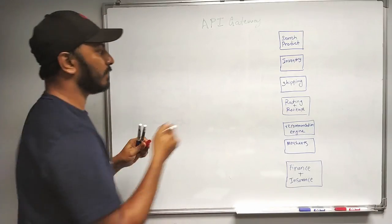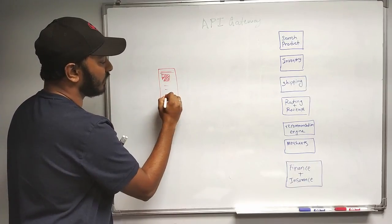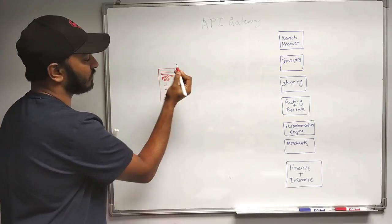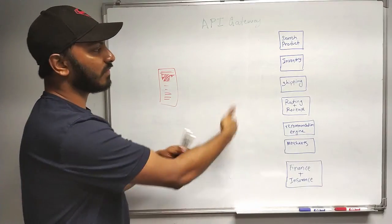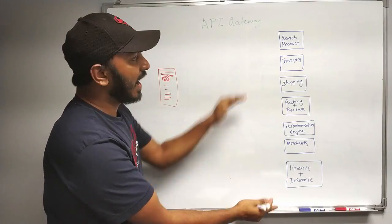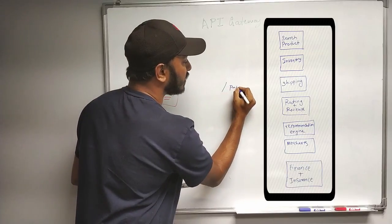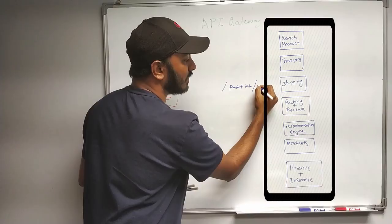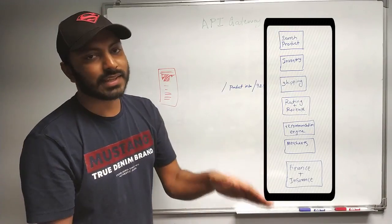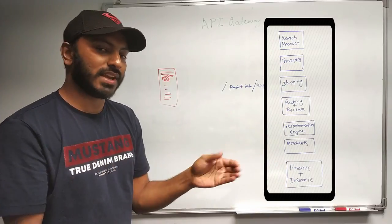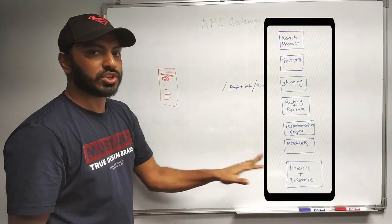Consider this is the product page which has all the comments, reviews, stars, and everything. To render this page, if it was a monolith architecture — consider these are modules and this is one total monolith application — we would have exposed one API called product info, passed the product ID like 121, and got all of this information in one single API call. We would have had access to all of these modules in the same code base, called all the functions, put it into one JSON, and returned it. With just one call we would have gotten all of this information in a monolith.